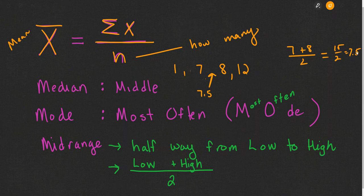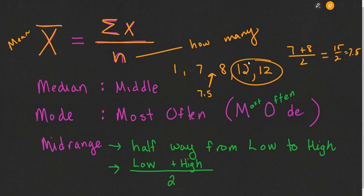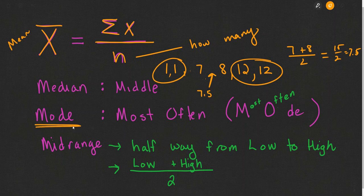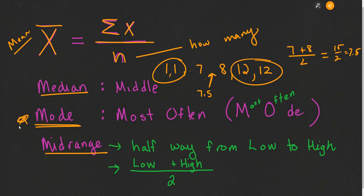The mode is the number that appears most often. With 1, 7, 8, 12, no number appears more often than the others. If I add another 12, the mode is 12 because there are more 12s than anything else. You could also have a tie for first place — if I added another 1, there would be two modes: 1 and 12. Mode is the only average where there can be more than one answer. There's only one mean, only one median, and only one midrange, but there could be more than one mode, or there could also be no mode at all.